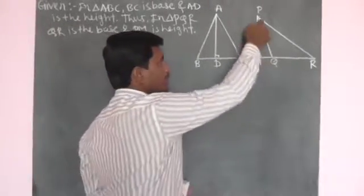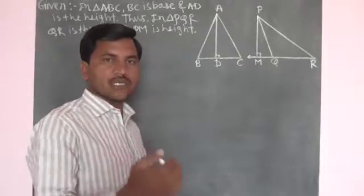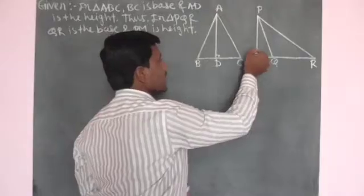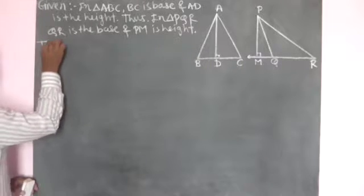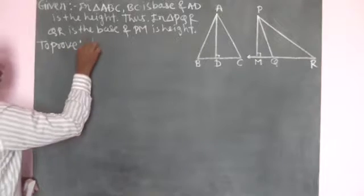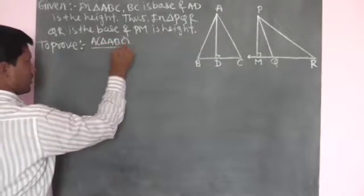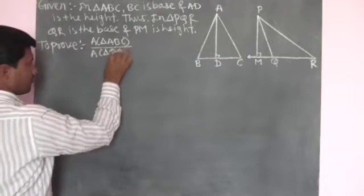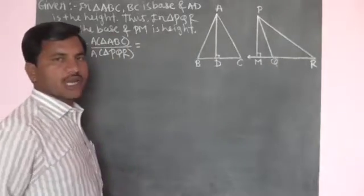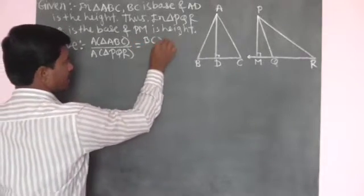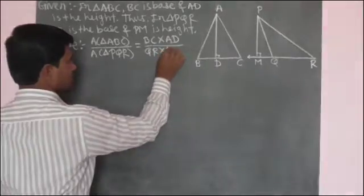Triangle PQR is an obtuse triangle. When we have an obtuse triangle, we get the height in the exterior part of the triangle. Therefore, PM is the height and QR is the base. To prove: the ratio of areas of the two triangles — that is, area of triangle ABC upon area of triangle PQR — is equal to the ratio of the product of their bases and corresponding heights, meaning BC × AD divided by QR × PM.